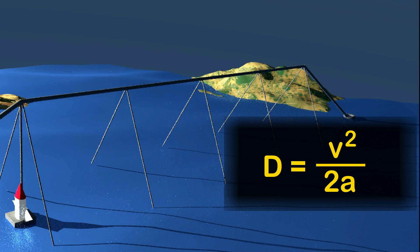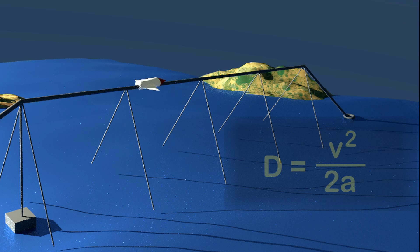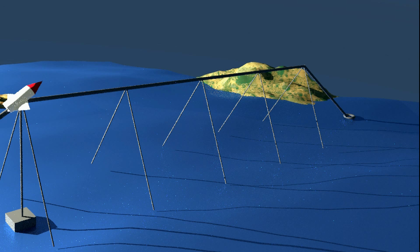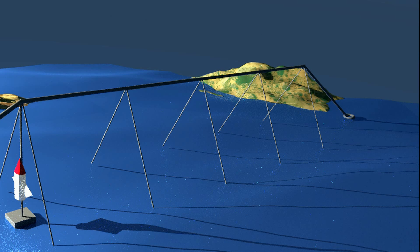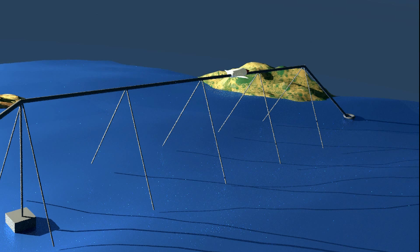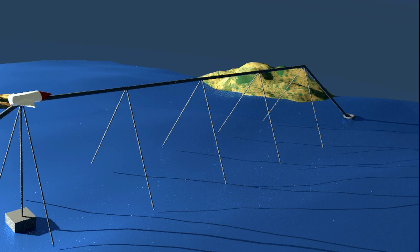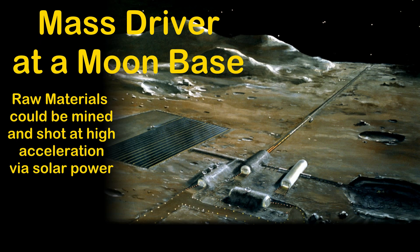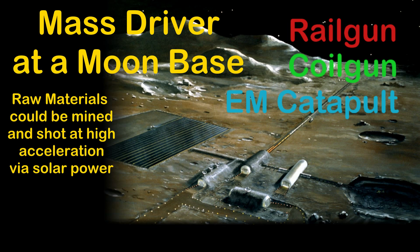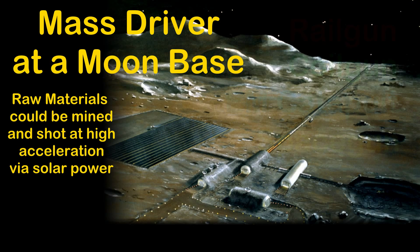Of course if you did that the people inside would be feeling 300g's of force, which is more than enough to kill you. Anything much over 10g's is a bad idea even for a short time for people. Bullets routinely undergo tens of thousands of g's of acceleration, but bullets have no hearts, lungs, brains, etc. So very short high acceleration tracks are possible but only for dumb matter or specially designed equipment and we tend to call these mass drivers.